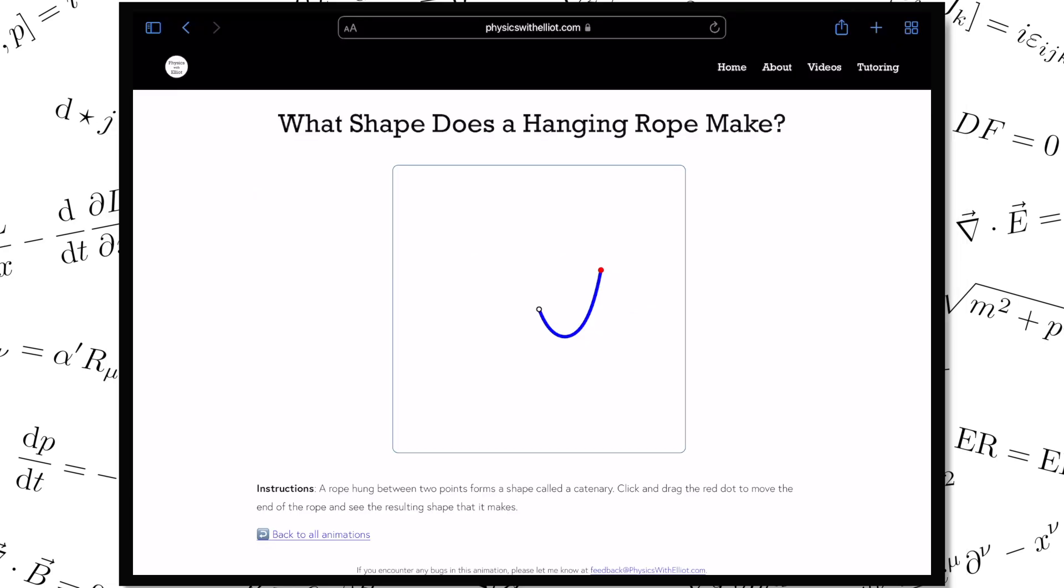That's what I've done in this animation that I made. One end of the rope is pinned at the origin, and the other end you can drag around to see what shape the rope will make. Of course you can also try this out for real, with any piece of rope or string that's hanging around your desk, or even just a spare wire or cable. But I'll put a link to this animation in the description below if you want to play with it too.